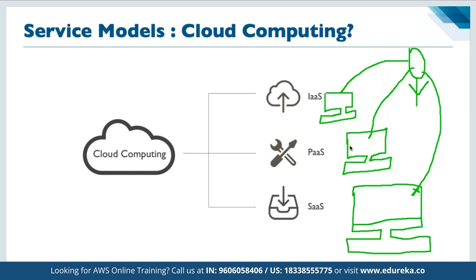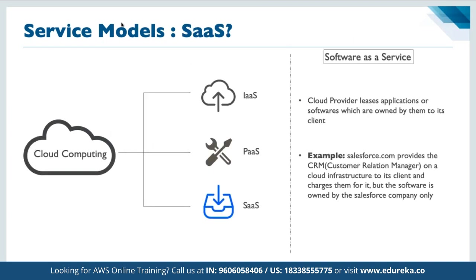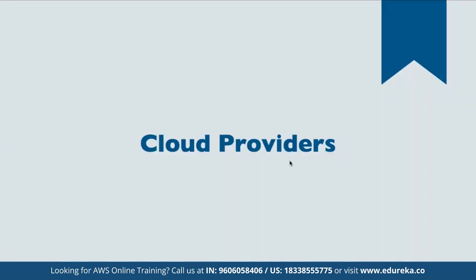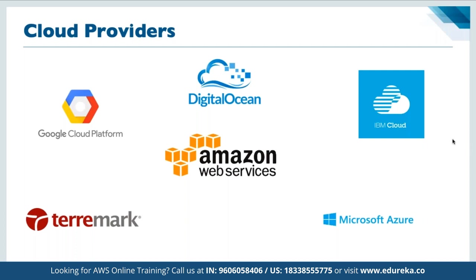These are the three main service models in cloud computing. AWS is a part of the Platform as a Service model where we get the entire infrastructure and can start developing on top of it. Software as a Service examples include Gmail, Google Drive, Google Maps, Facebook, Netflix, and Amazon Prime — all software offered as a subscription-based service. AWS was started back in 2006 and has been the market leader for cloud computing since then, followed by Microsoft Azure and GCP.